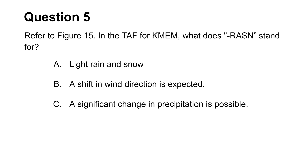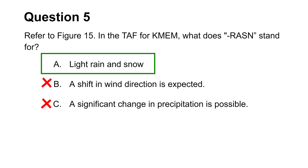The fifth question wants you to know what minus RASN stands for. You do not have to look at the TAF report to answer this question. Remember, minus means light intensity; RA stands for rain, while SN denotes snow. This makes choice A the answer.